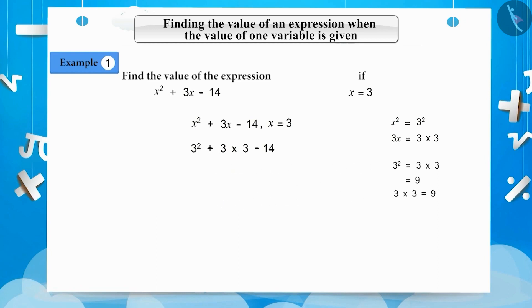Substituting these values in the expression, we get 9 plus 9 minus 14. 9 plus 9 is 18 and 18 minus 14 is 4. Therefore, the answer will be 4.